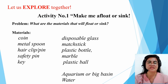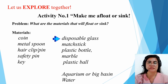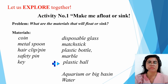But first, we have to perform the activities. For our first activity, Activity Number One: Make Me Float or Sink. For our problem: what are the materials that will float or sink? Here are the materials: coin, metal spoon, hair clip or pin, safety pin, key, disposable glass, matchstick, plastic bottle, marble, plastic ball, aquarium, and the most important material — water.